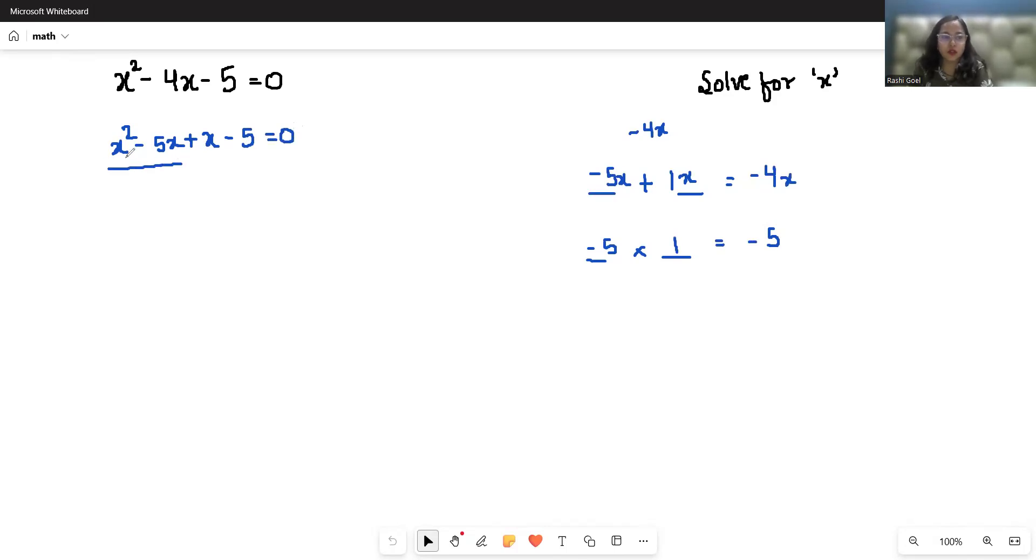I'm going to take x as common from the first two terms, so what is left is x - 5. And from the next two terms, if I take +1 as common, x - 5 = 0. Now the bracket is common, that is x - 5, so what is left is x + 1.